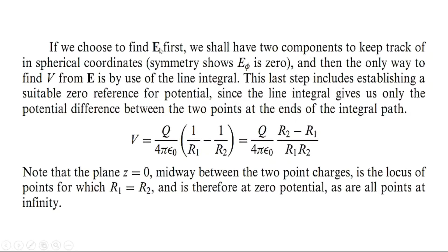If we choose to find the electric field intensity first, we have two components to keep track of in spherical coordinates. The E_z component is zero, meaning the z-components of the electric field intensity cancel out each other. Symmetry also shows that the E_φ component is zero, since the two point charges are along the z-axis and there is no other charge to produce a phi component. The only way to find the electric potential from the electric field intensity is by use of the line integral, which gives us only the potential difference between the two end points.